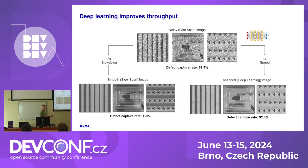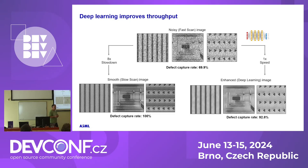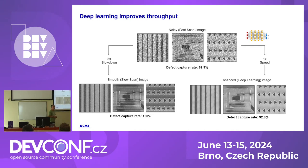And because nowadays every talk needs something about machine learning, I also added something. Some of our colleagues created scans of the different chips and with those scans they were able to capture defects at almost 70%. If we would slow down those scans by eight times, we get better results and can capture 100% of the defects. But that means the scanning becomes a bottleneck — we can only scan one out of eight wafers now, which means we might miss stuff. So colleagues used deep learning on top of the normal scan at the same speed, and they were able to detect almost 93% of the cases. That way we can still measure as many wafers as before and capture quite a bit of the defects.